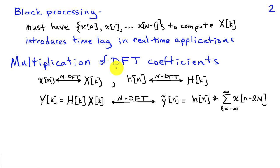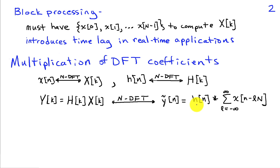The question is: what happens when you multiply DFT coefficients? We have a signal x of n and take an N-point DFT to get coefficients X[k]. Similarly, we have the impulse response h of n and take an N-point DFT to get H[k]. If we form Y[k] as the product of these DFT coefficients, the inverse DFT is given by the convolution of h of n with the sum from l equals minus infinity to infinity of x of n minus l·N. This is a shifted version of x of n, shifted by l times N, and we add all those up.